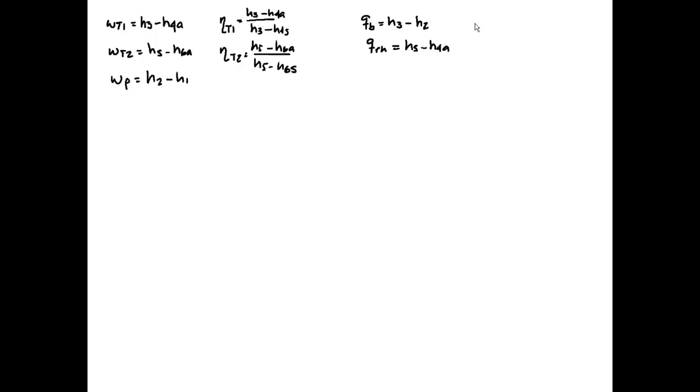This is the solution to the problem. Remember that the efficiency, which is what we're looking for, is the net work divided by Q_in. What we need to do is just find the properties at each state.